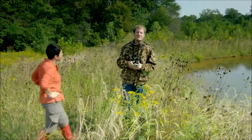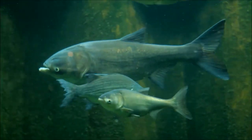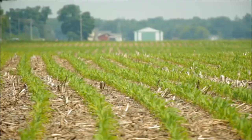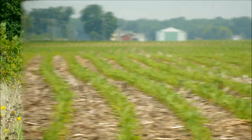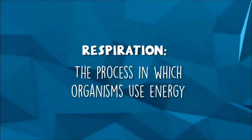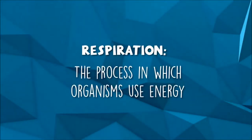Just like your car or smartphone, all living things require energy to operate. In the case of plants and animals, they need energy to grow and thrive. For example, plants use energy to synthesize more biomass. Warm-blooded animals use energy to heat their bodies, sense their environment, and do physical work. The process in which organisms use energy to do these things is called respiration.